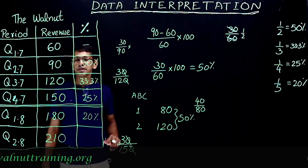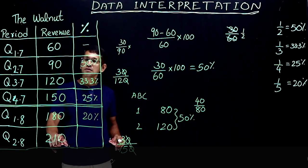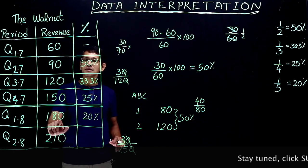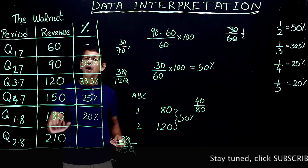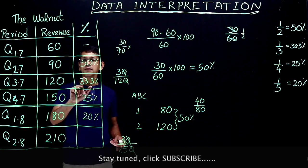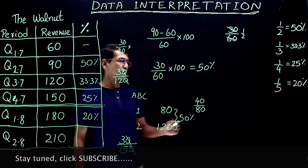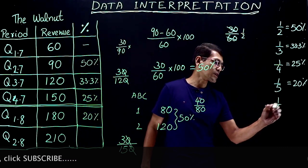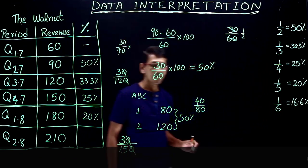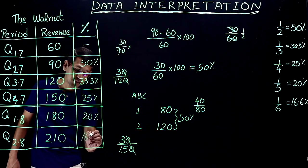Now 180 to 210. The increase is again 30, but the base year is 180. So 30 by 180 equals 3 by 18, which is 1/6. 1/6 of 100 is 16.6 percentage. So the increase from quarter 1 to quarter 2 2018 is 16.6 percentage.